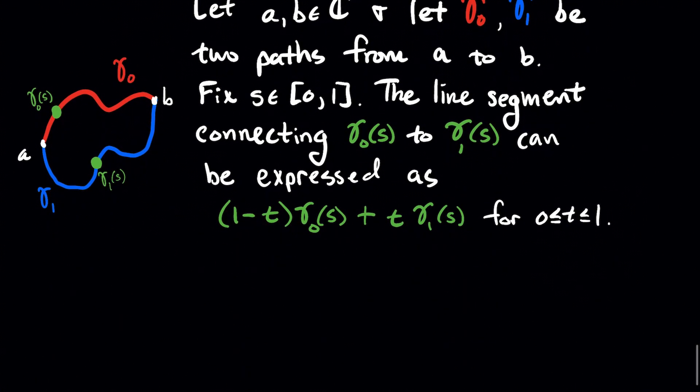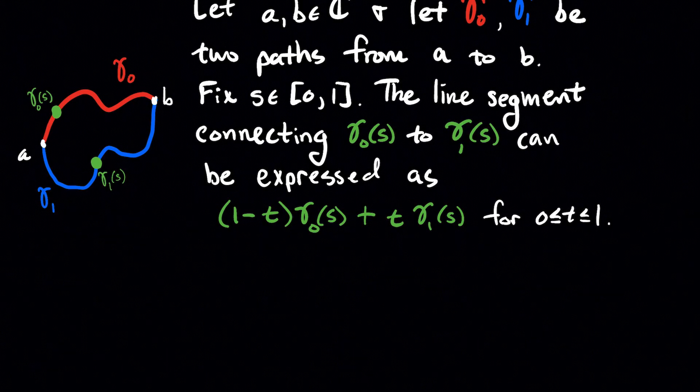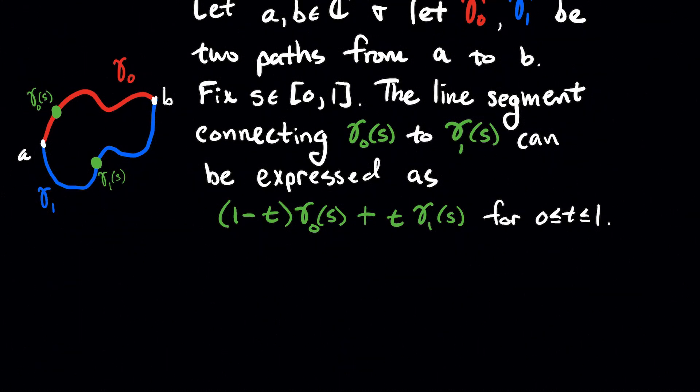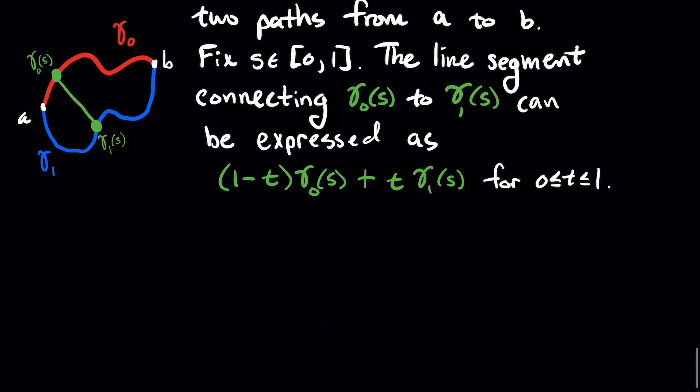And so what we're going to do is we're going to think about what are the points on the red curve and the blue curve that that particular s picks out. And what we maybe remember from like a calculus three class is, we can get the parametric equations of a line that connects one point to another. And that line segment that connects these two points to each other has an expression that looks like this: (1-t) times gamma naught of s, my starting point, plus t times gamma one of s, my ending point, where t gets to be any number between zero and one. And so there's our line segment.